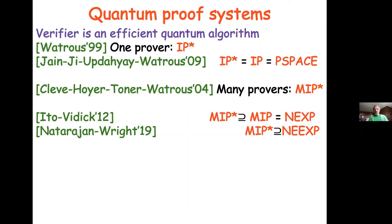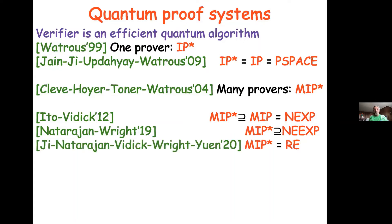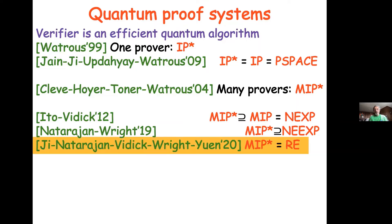MIP* can solve problems in non-deterministic exponential time, something we know classical MIP cannot do beyond that. The race was on to understand the full power of multi-prover interactive proofs with quantum abilities. And that's the breakthrough: MIP* equals RE. You can take even uncomputable functions — RE, like the halting problem — and convince membership in such a set to an efficient classical verifier.